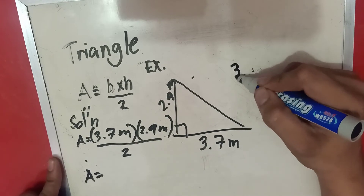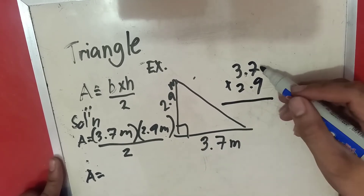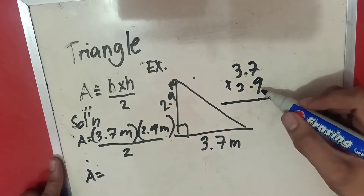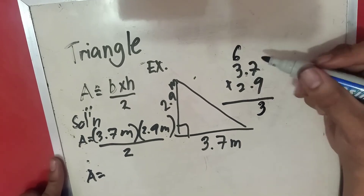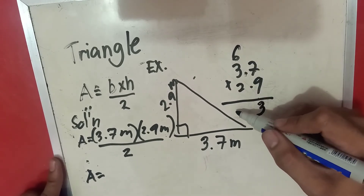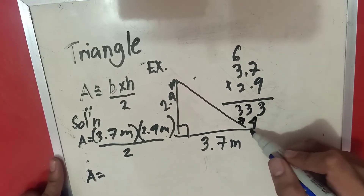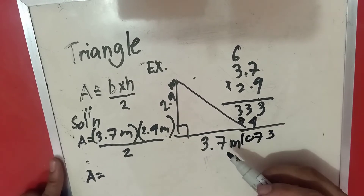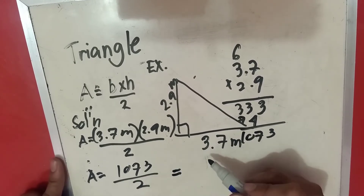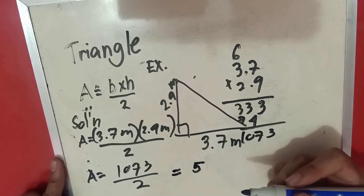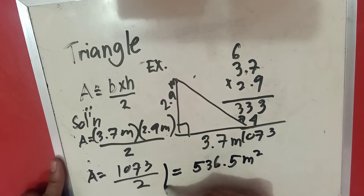We multiply 3.7 times 2.9. Working through the multiplication: 3.7 times 2.9 equals 10.73. So the area is 10.73 over 2, which equals 5.365 meters squared.